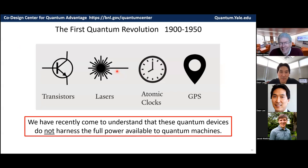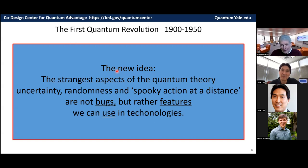So amazing as these technologies are, and they did require the theory of quantum mechanics to understand how to build them, we've recently come to understand that these devices are not as quantum as devices could be. They don't take full advantage of the power available to quantum machines. And that's what this second quantum revolution is all about. The big new idea is that really the strangest aspects of quantum theory, uncertainty, randomness, and this spooky action at a distance, which seem like they give you less ability to understand the world than classical mechanics, where everything is deterministic. So it seems like these are bugs. But we now understand there are also features which we can actually use in practical technology. So that's what I'm going to talk about.